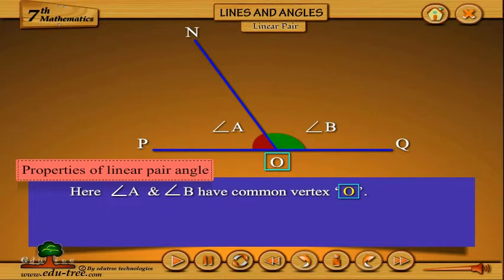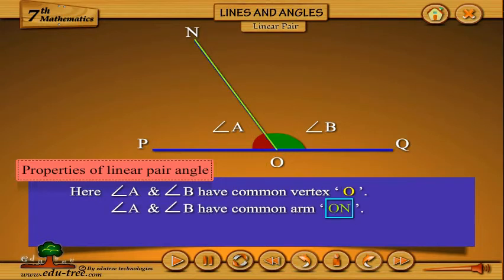Properties of linear pair. Angle A and Angle B have common vertex O. Angle A and Angle B have common arm O N.